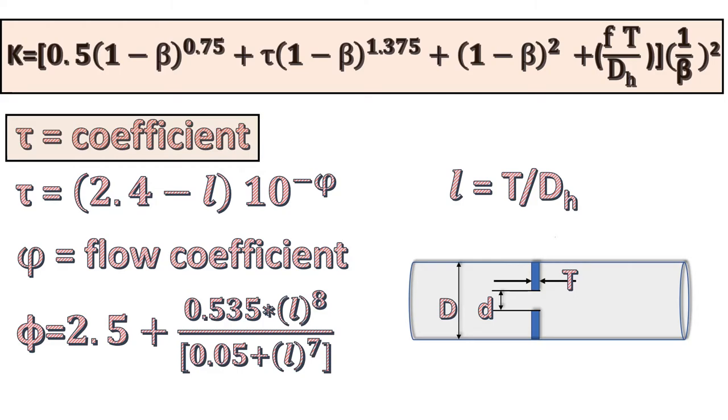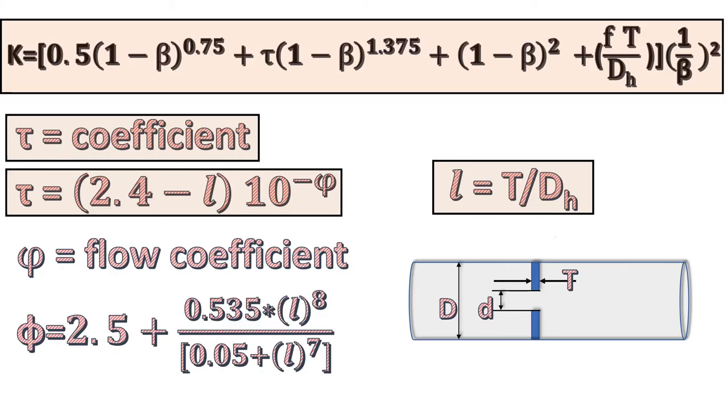It can be calculated using this equation. In this equation, symbol L is the ratio of orifice plate thickness to the hydraulic diameter, and symbol φ is velocity coefficient.